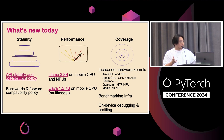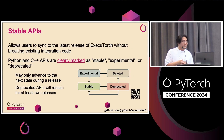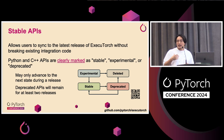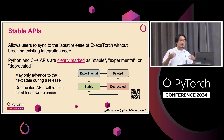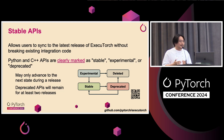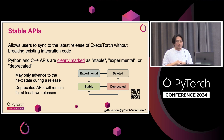On the stability pillar, one thing we are focusing on is stable APIs. Developer application-layer code can depend on ExecuTorch and still be able to upgrade to the latest releases without breakage. We mark APIs as stable, deprecated, or experimental, and we also have a deprecation policy for that.